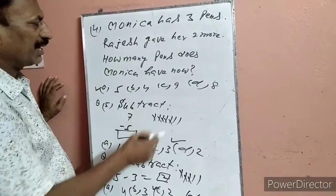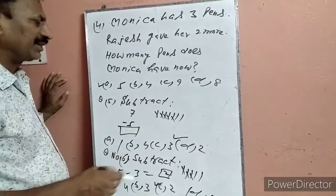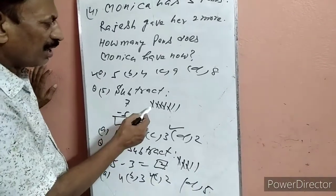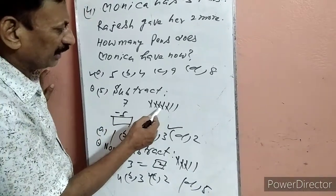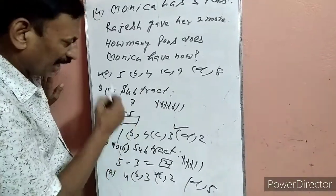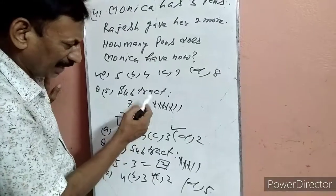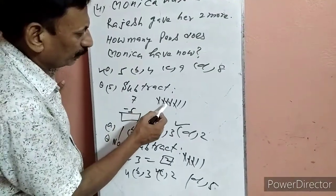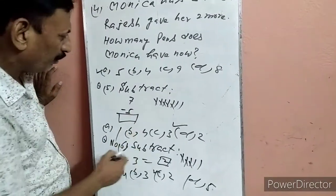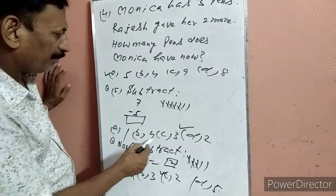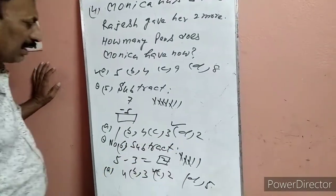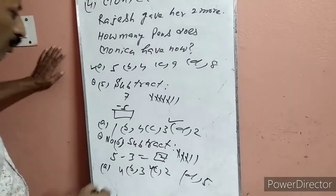Question 5: Subtract — 7 minus 5. Subject means घटाना है. हम 7 line drop करेंगे, 5 को cross करेंगे: 1, 2, 3, 4, 5. बच गया: 1, 2. Answer 2. 2 कहां पर है — D पर. D पर हमने टिक लगा दिया.